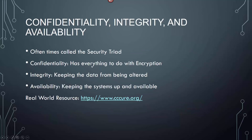Confidentiality, integrity, and availability are oftentimes called the security triad. Confidentiality has everything to do with encryption — basically encrypting all of your data and assets. Integrity is keeping the data from being altered, basically hashing. And availability is keeping the systems up and available, which also applies to your server-side real-world resources.